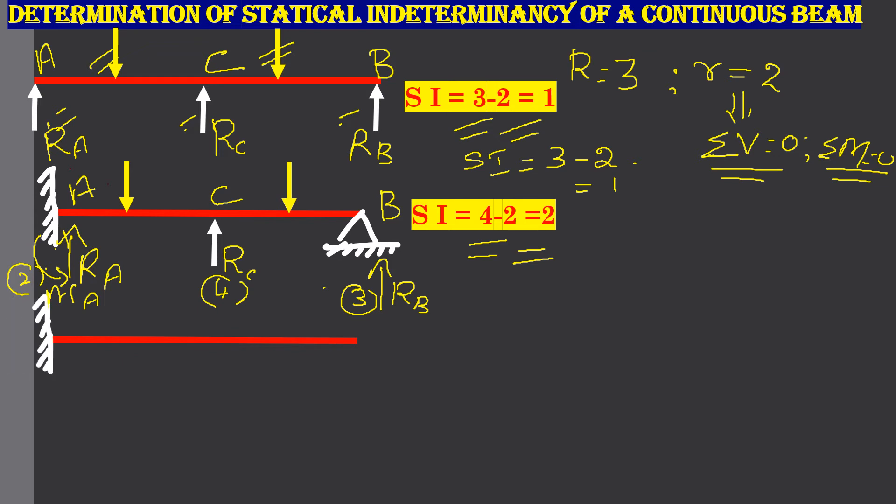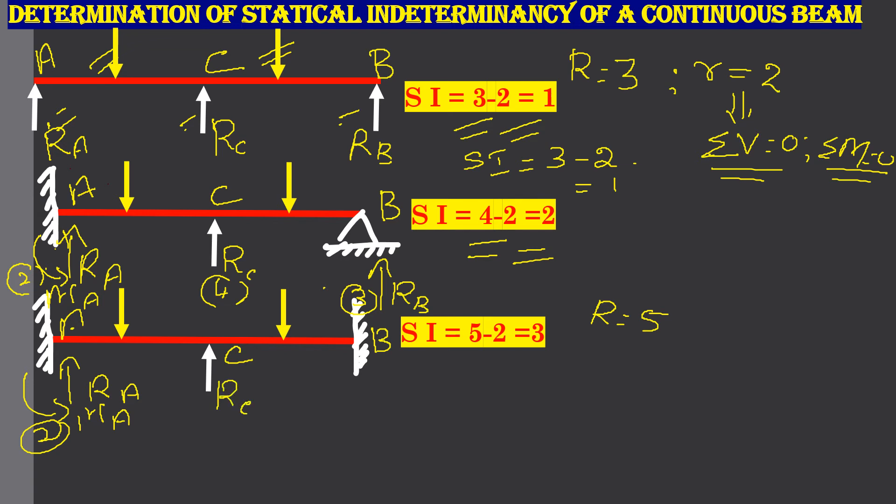Now, the third example is fixed support at A, another fixed support at B and a simple support at C loaded by two vertical concentrated loads. So, our number of unknowns R is equal to 5. How is R equal to 5? Here you have RA and a moment MA, so 2 unknowns at A. RC, so 1 unknown at C, and we will have vertical reaction RB and a moment at B. So, it may be clockwise or anticlockwise. Totally, we have 5 unknowns.